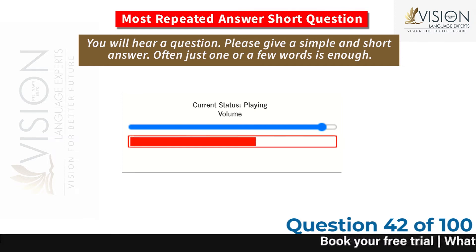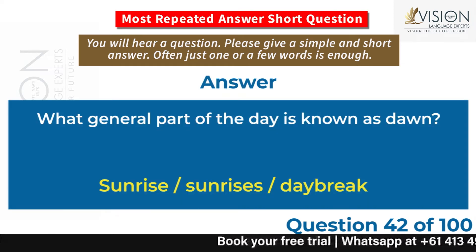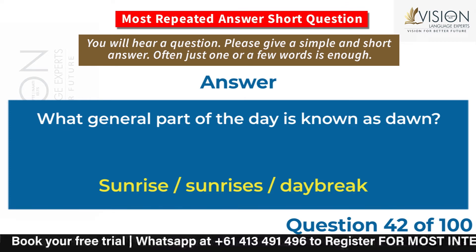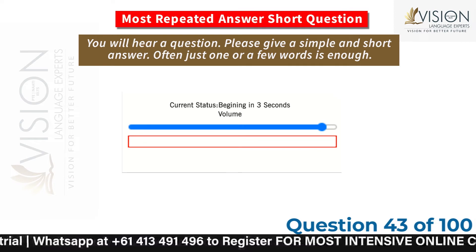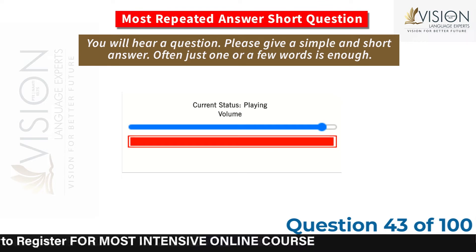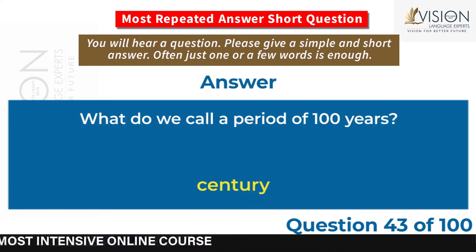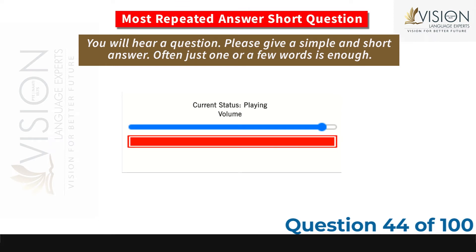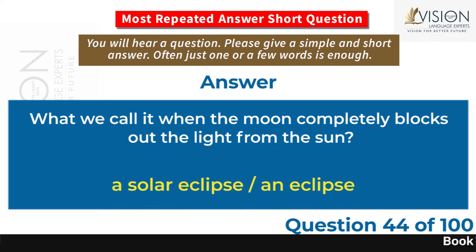What general part of the day is known as dawn? Sunrise, daybreak. What do we call a period of 100 years? Century. What do we call it when the moon completely blocks out the light from the sun? A solar eclipse.